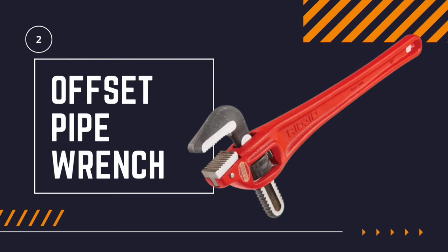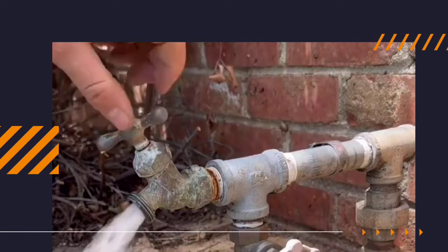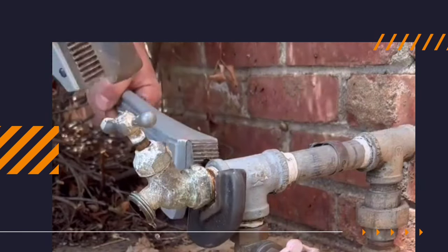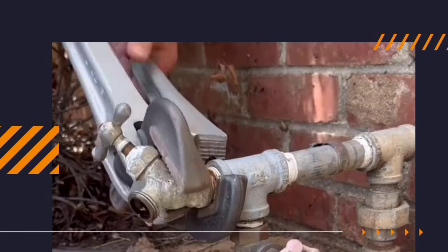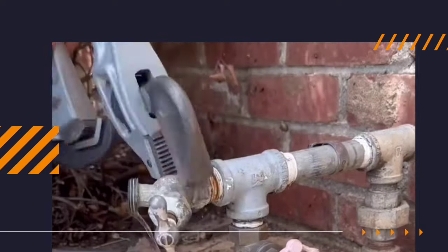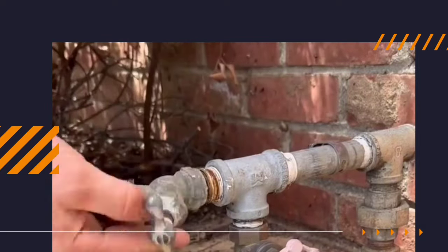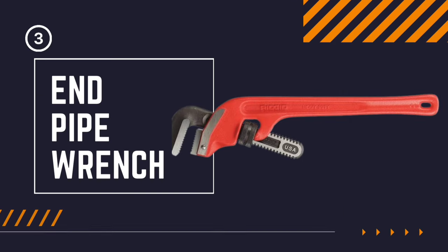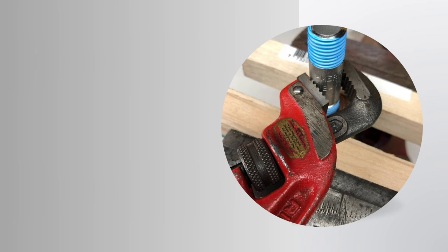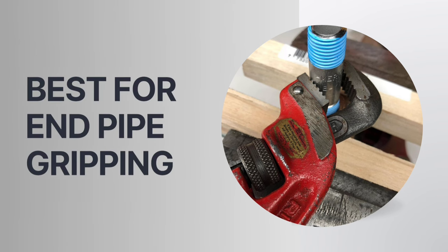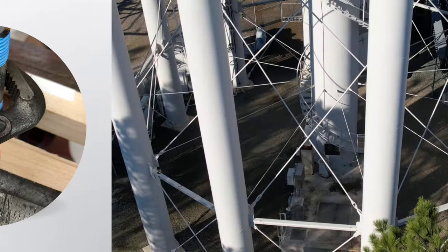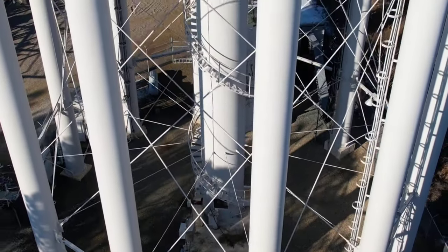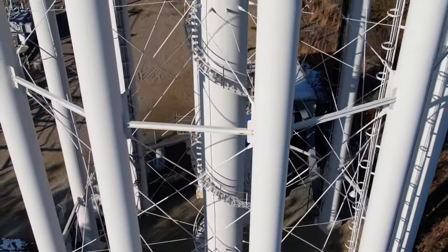Next up, we have the offset pipe wrench. This one is designed to work on pipes that are in awkward or hard to reach positions. The offset design allows you to access tight spaces without straining yourself or damaging the pipe. Then, there is an end pipe wrench which is ideal for jobs where you need to grip a pipe from the end. It is perfect for vertical pipes or situations where you cannot wrap the wrench around the middle of the pipe.